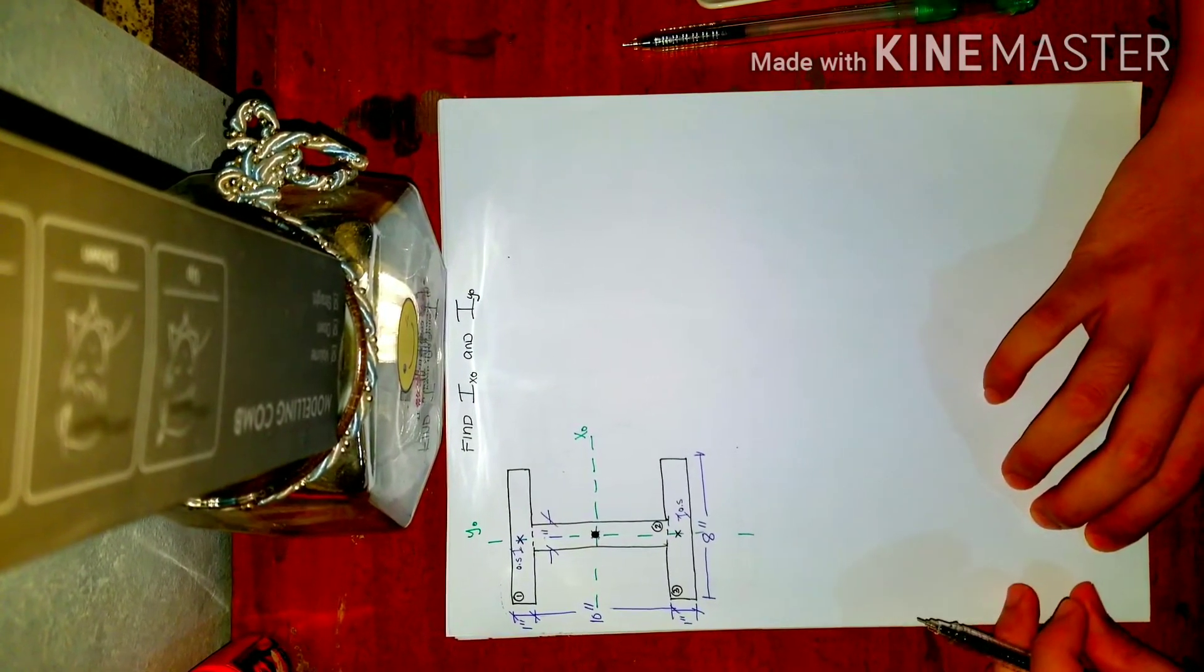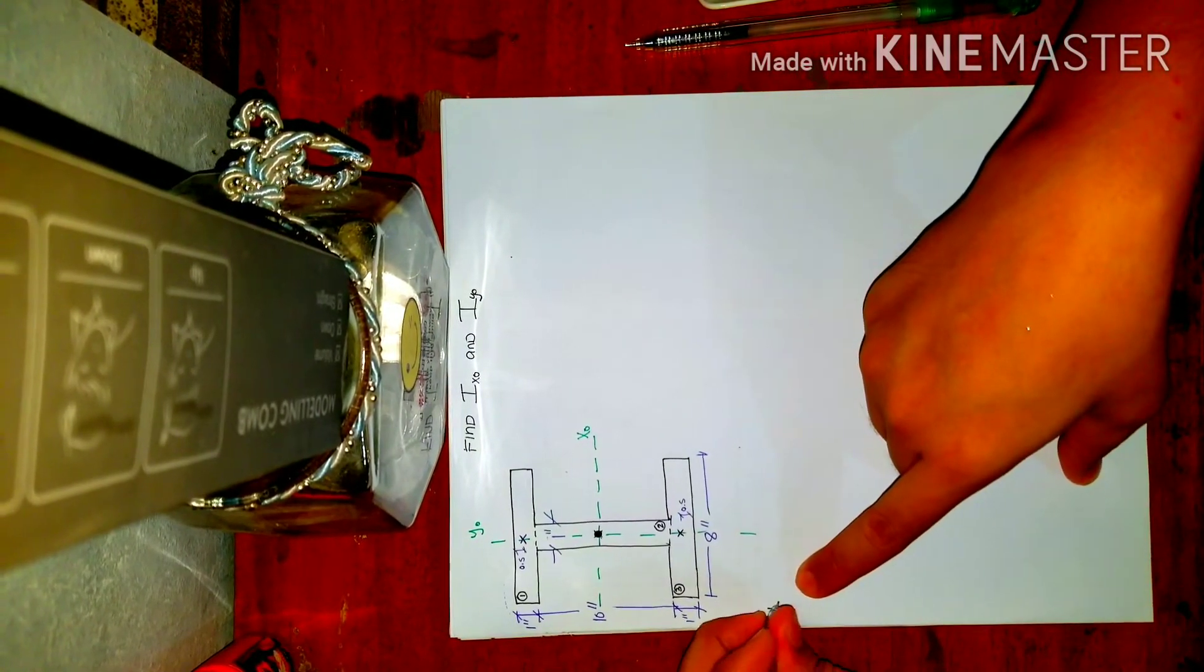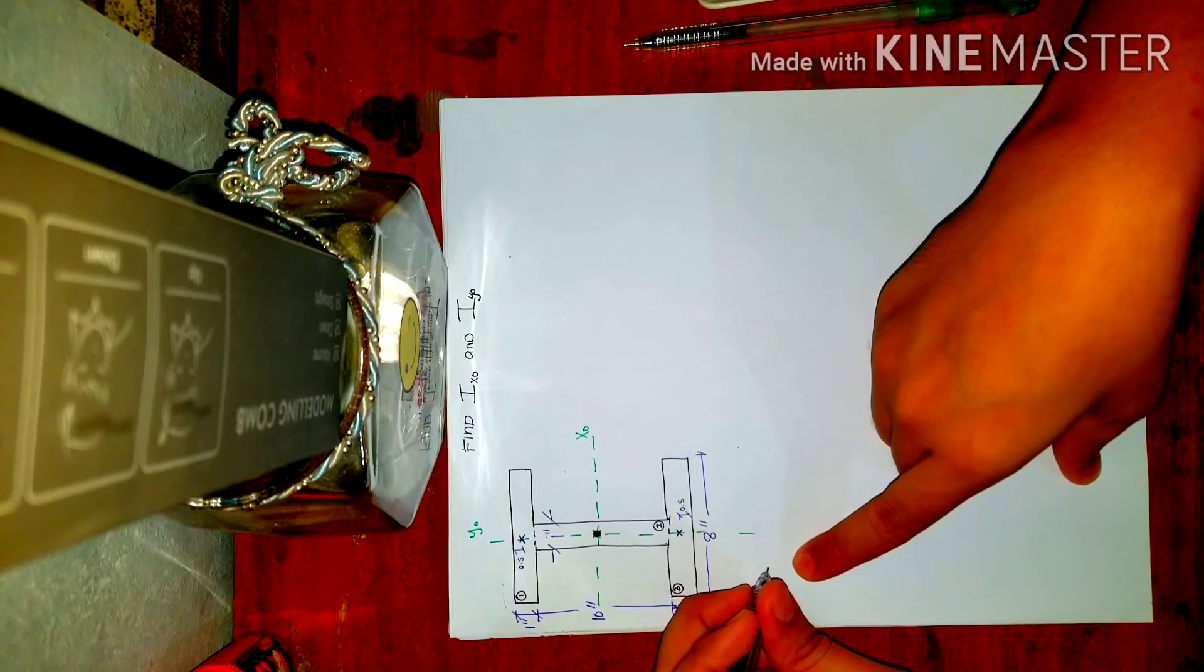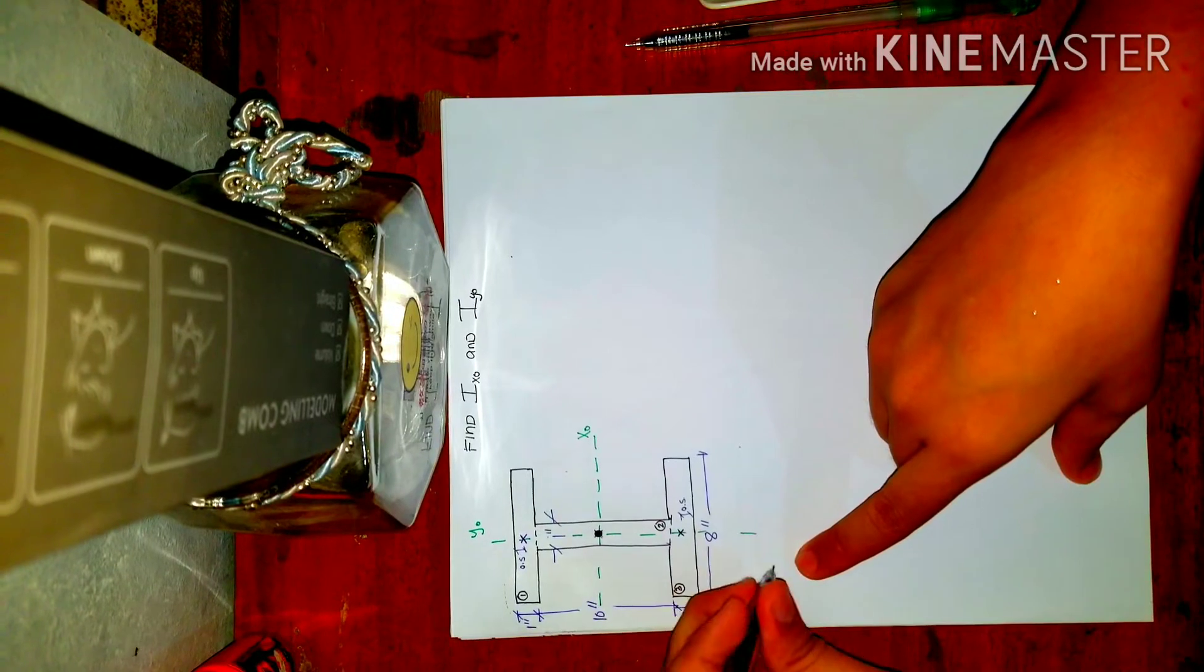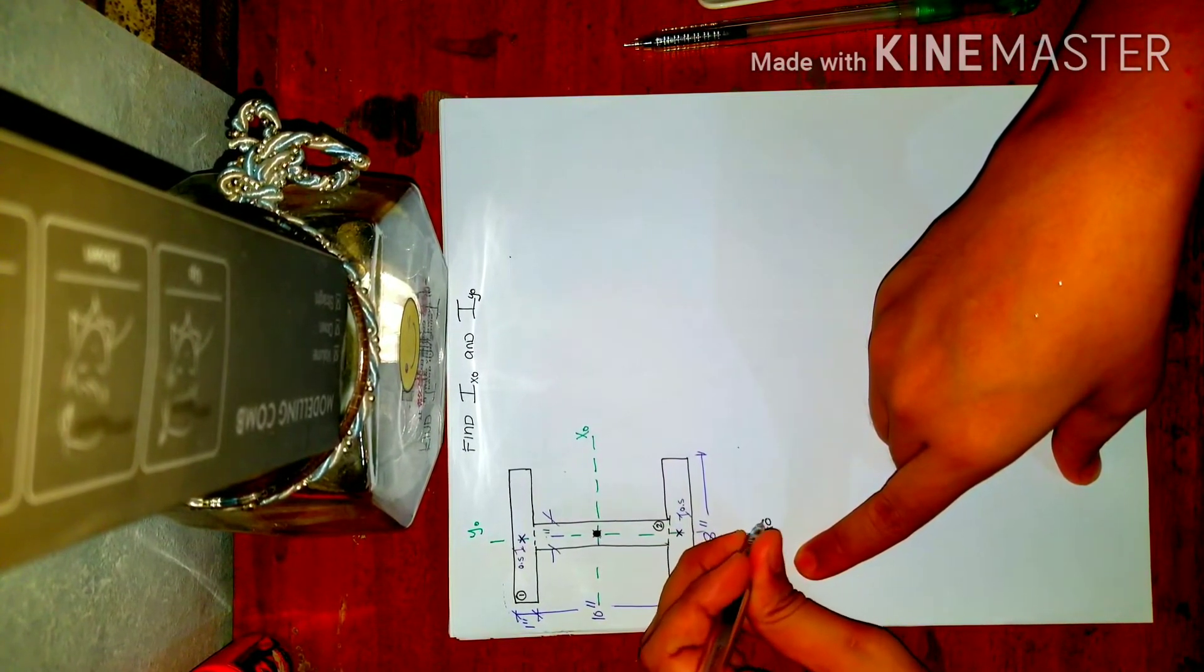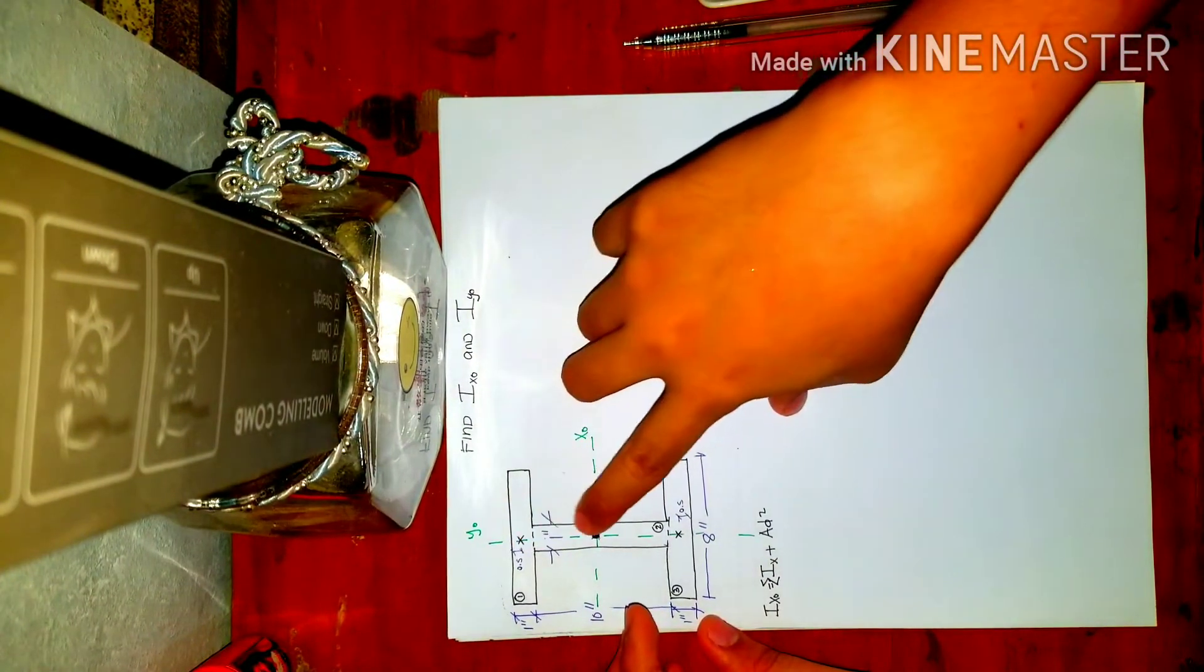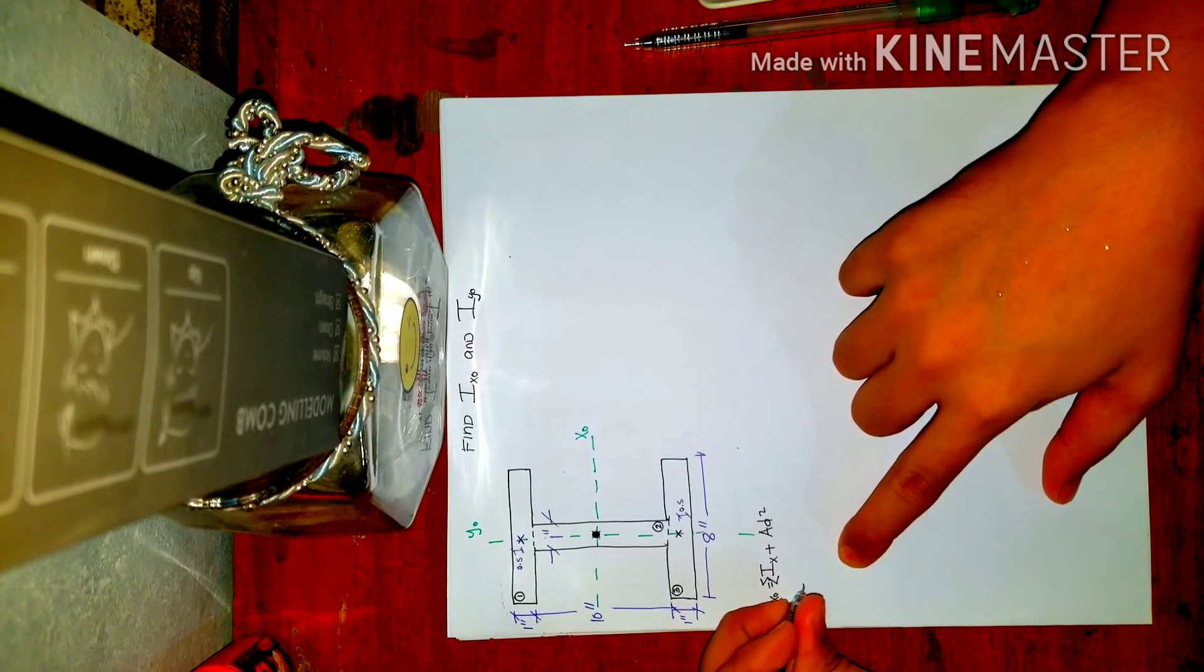Okay, so let's solve for the - what do you want us to start with? Okay, let's do Ix. So Ix-o. So what's the formula? That equals the summation of Ix plus Ad squared, the summation of each moment of inertia of each rectangle.